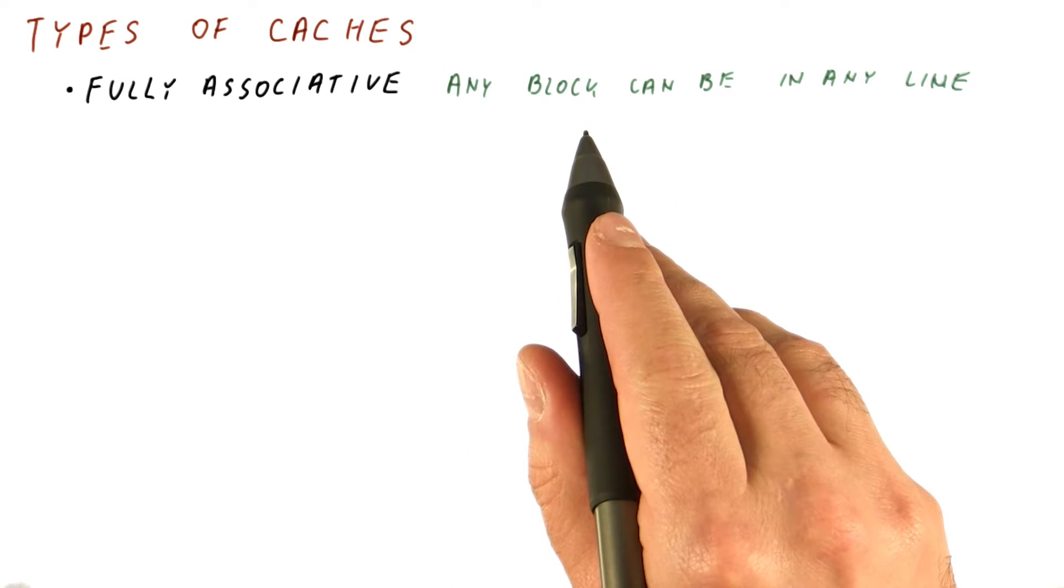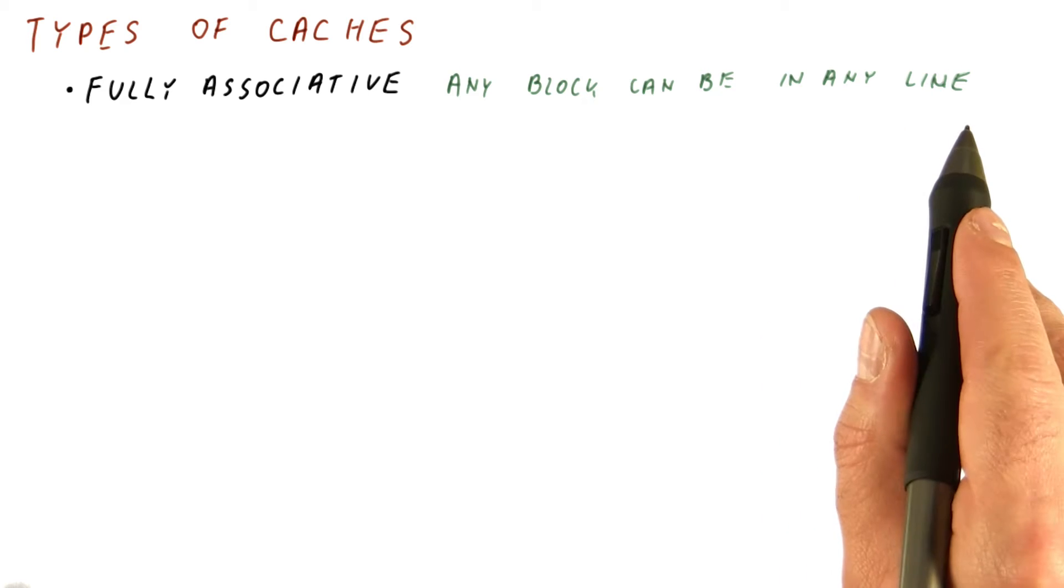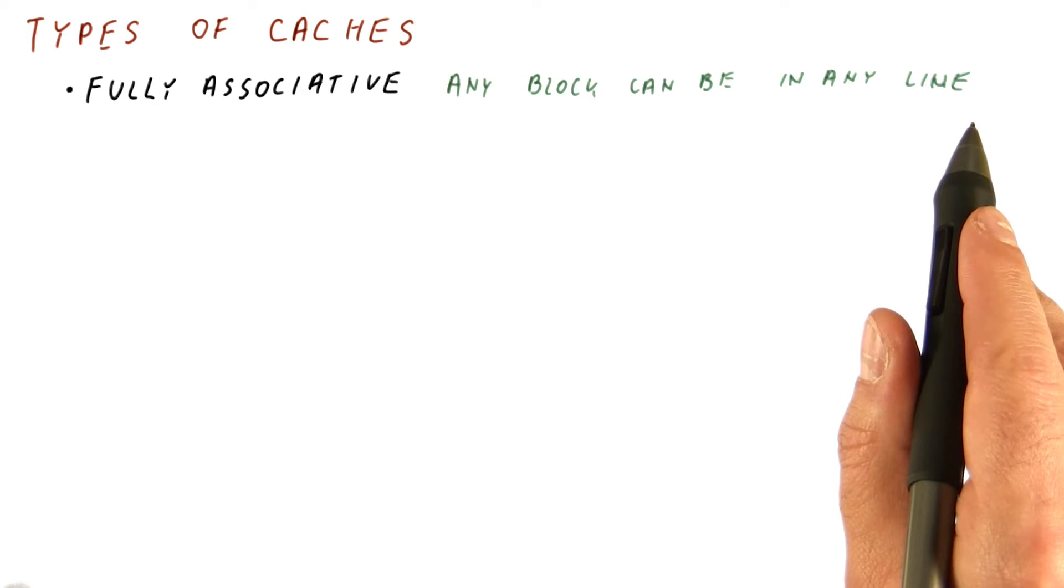any block from memory can be placed into any line in the cache. So if the cache has room for 16 lines, then we need to search up to 16 tags to find whether the block we're looking for is actually in the cache.